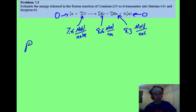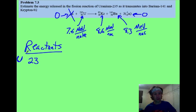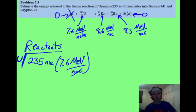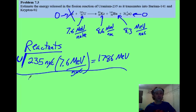So what you do is look at your reactants. You have nothing coming from this thing, and you have how many nucleons? For uranium, 235 nucleons in it. You multiply that by 7.6 MeV per nucleon. Nucleons cancel out, and you get 1786 MeV. That's the only thing you have from reactants.